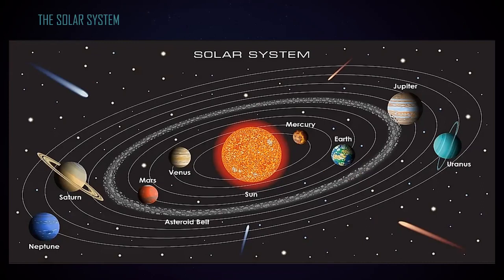There are millions of asteroids and meteoroids in the solar system. There is an asteroid belt consisting of rocky objects which are smaller than the planets. Most of these asteroids are found between Mars and Jupiter. Between the orbit of Mars and Jupiter there is a ring of rocky objects known as the asteroid belt, which consists of asteroids and meteoroids.